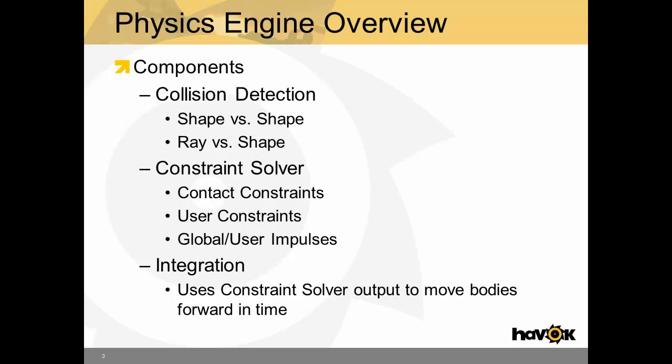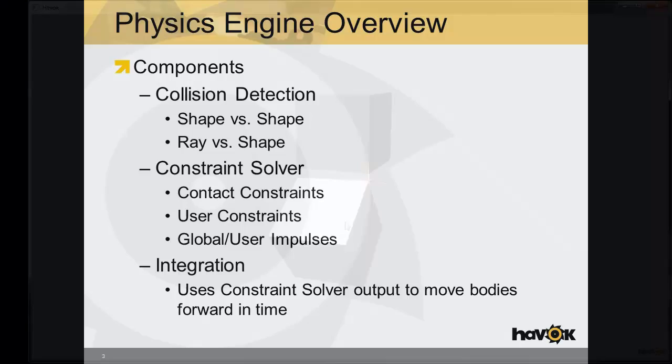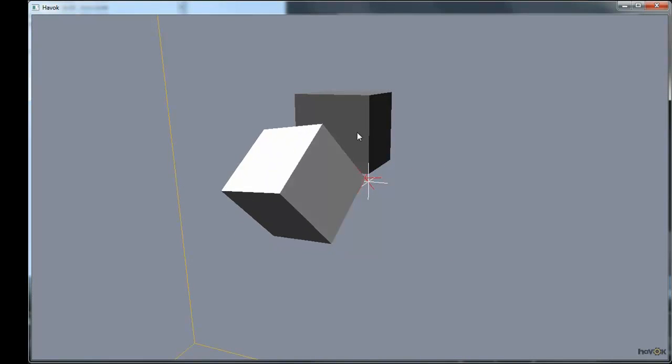Another component is the constraint solver. In a 3D world, there are typically six degrees of freedom. Three linear degrees of freedom in the x, y, and z axes. And three angular degrees of freedom in the x, y, and z axes. Constraints simply limit or remove degrees of freedom. An example of this is a contact constraint. When two bodies come in contact with one another, they can no longer move in the direction of each other. That's a constraint. Other types of constraint are user constraints. So that's things like hinges or ball and socket joints.